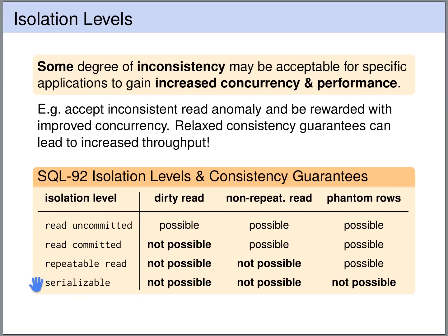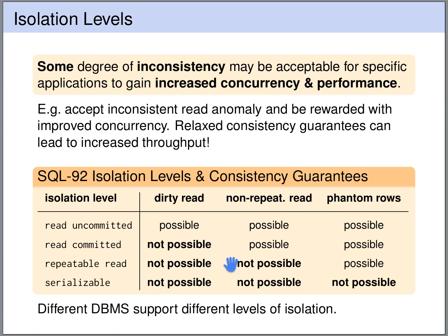Serializability is the highest level of isolation. On the other hand, the lowest level is read uncommitted — we allow dirty reads, non-repeatable reads, and phantom rows. In between, we have other isolation levels: read committed prevents dirty reads, and repeatable read prevents both dirty reads and non-repeatable reads. What isolation levels are available depends on your database management system — for instance, Oracle does not support full serializability.